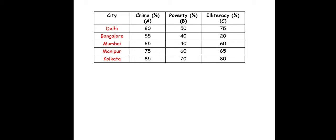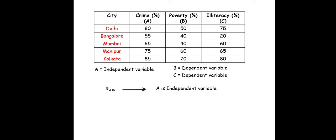We need to determine what kind of correlation exists — strong, moderate, or weak — depending on independent and dependent variables. Here, A (crime) is the independent variable, B (poverty) and C (illiteracy) are dependent variables. Capital R is mainly used for designating multiple correlation. So we write it as capital R subscript A.BC, which implies that A is the independent variable and B and C are dependent variables.